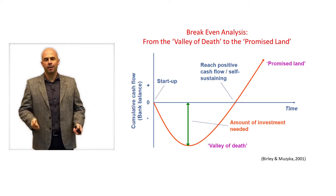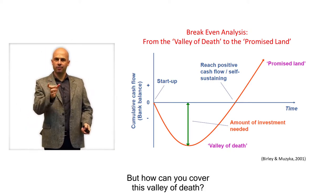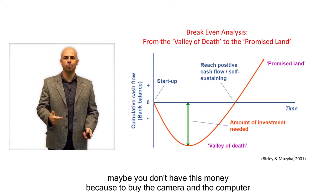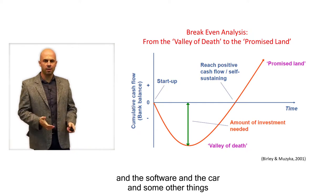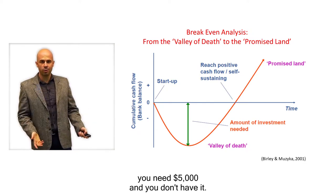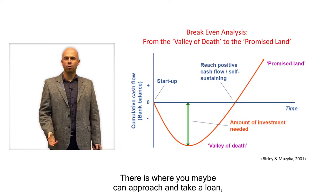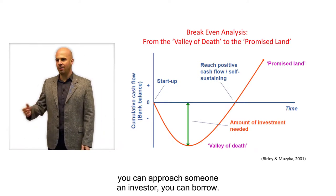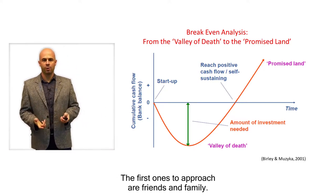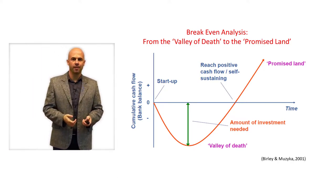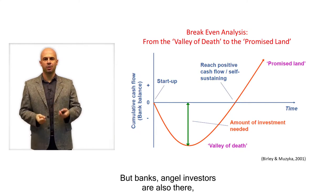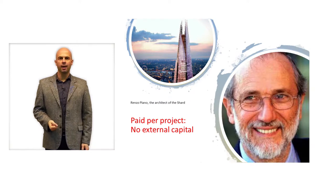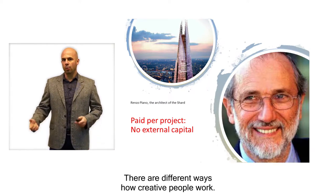How can you cover this valley of death? Maybe you don't have this money — to buy the camera, computer, software, and car you might need five thousand dollars and you don't have it. That is where you can approach and take a loan, or approach an investor. The first ones to approach are friends and family, but banks and angel investors are also there.